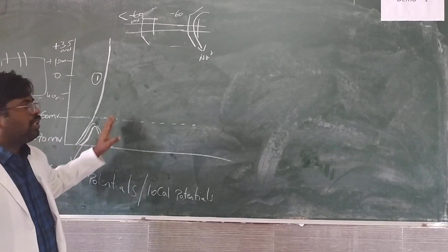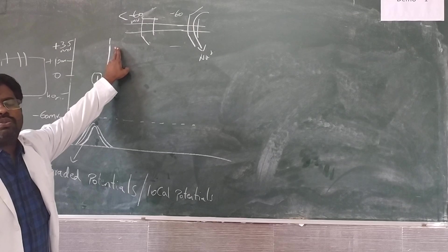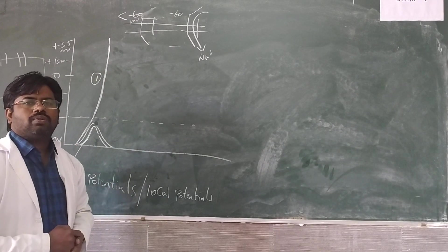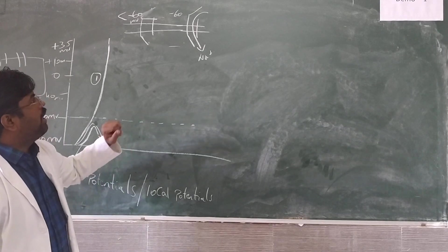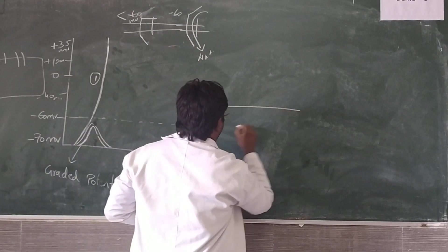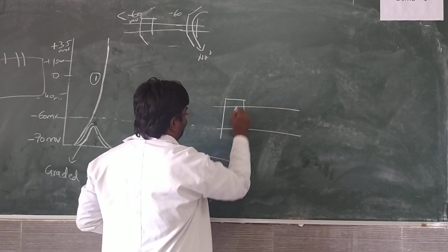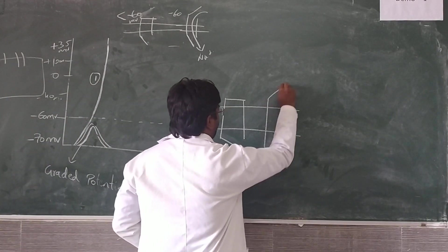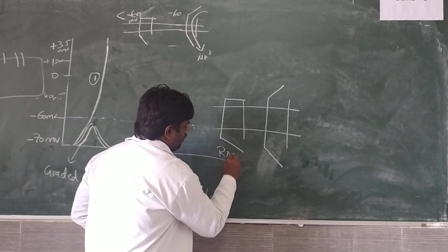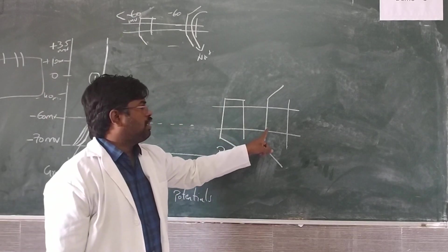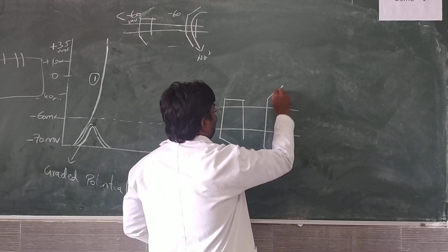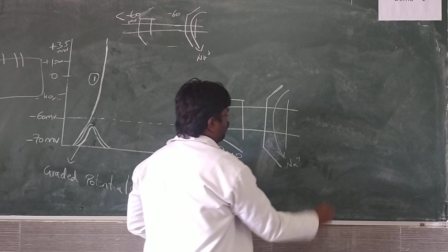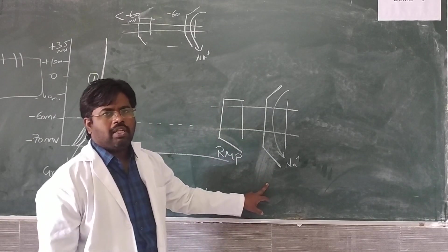When the depolarization phase is about to reach the equilibrium potential — the sodium equilibrium potential, that is plus 35 millivolts — when it tries to reach that equilibrium level, the active gates of sodium will be closed. During the resting phase of sodium channels, the active phase has both the active gate and inactive gate open, allowing easy influx of sodium ions into the cell, increasing positivity.